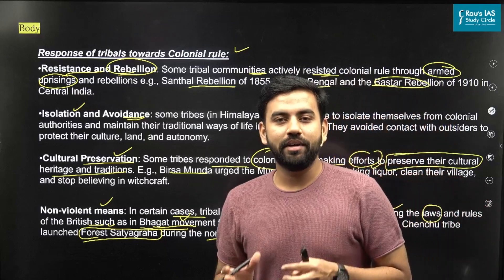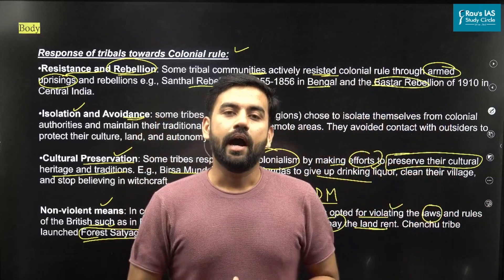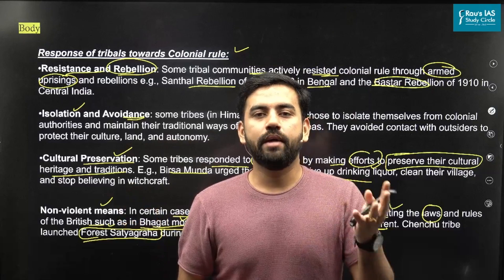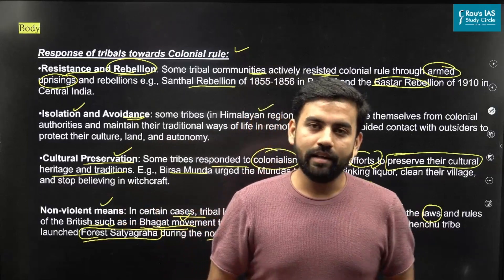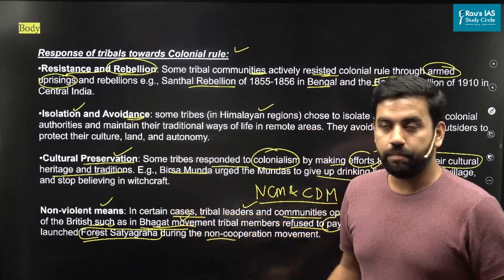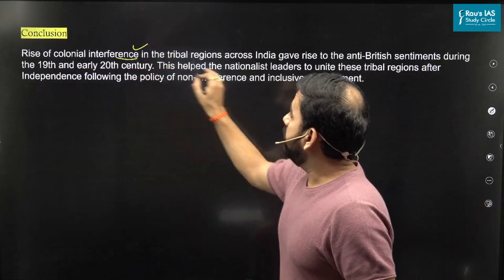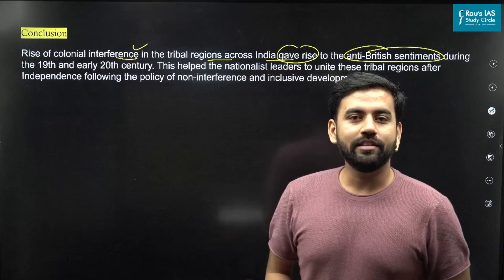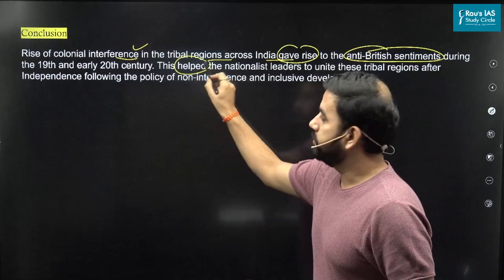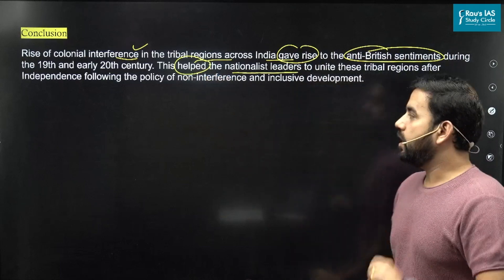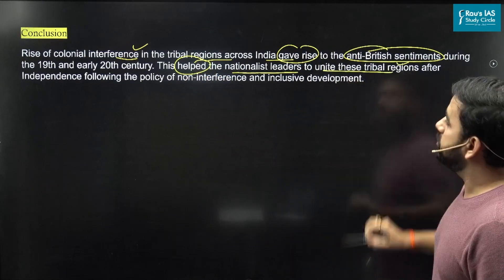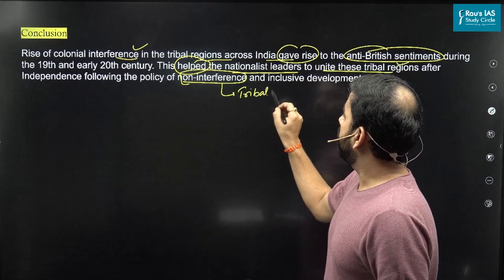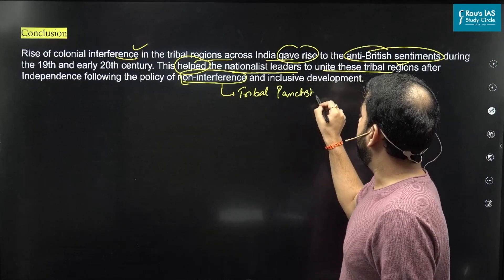This answer can effectively address what the British were doing against the tribes and how the tribes responded. In the conclusion, you can write that the rise of colonial interference across India gave rise to anti-British sentiment among the tribals, who were also against the colonial rule. This helped nationalist leaders, especially Jawaharlal Nehru, to unite the tribal regions after independence and follow the policy of non-interference — one of the key concepts of Tribal Panchsheel. Through this approach, you can answer this question and gain as many marks as possible.